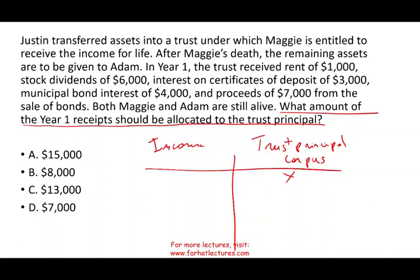Justin transferred assets into a trust under which Maggie is entitled to receive income for life. Think of this as husband and wife — Justin transferred the asset. After Maggie's death, the remaining assets can be given to Adam — think of Adam as their son. In year one, the trust received rent of $1,000, stock dividend of $6,000, and interest on the certificate of deposit of $3,000. Municipal bond interest of $4,000, and proceeds of $7,000 from the sale of a bond. Any current income coming from the trust goes into the income section. Rent — that's current income, so it goes there. So the rent is out.